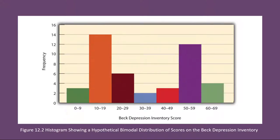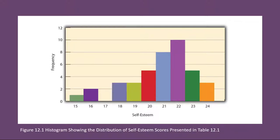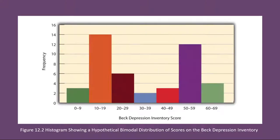Distribution shapes. When the distribution of a quantitative variable is displayed in a histogram, it has a shape. The shape of the distribution of self-esteem scores in figure 12.1 is typical — there's a peak somewhere near the middle of the distribution and tails that taper in either direction from the peak. The distribution of figure 12.1 is unimodal, meaning that it has one distinct peak, but distributions can also be bimodal, meaning they have two distinct peaks. Figure 12.2 shows a hypothetical bimodal distribution of scores on the Beck Depression Inventory. Distributions can also have more than two distinct peaks, but these are relatively rare in psychological research.